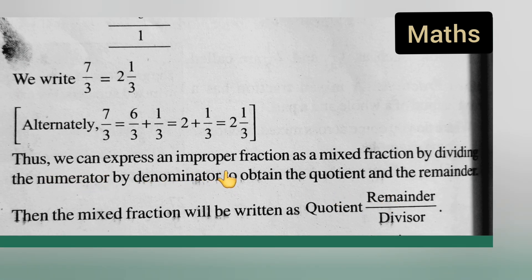Thus, we can express an improper fraction as a mixed fraction by dividing the numerator by denominator to obtain the quotient and the remainder. Then the mixed fraction will be written as quotient, remainder upon divisor.